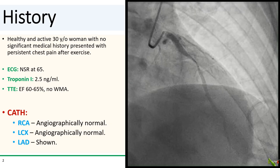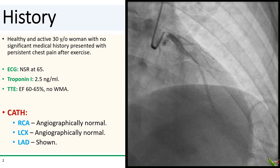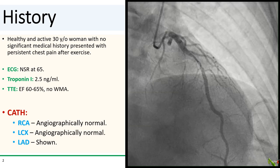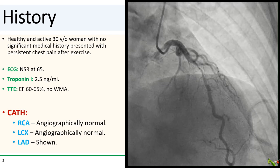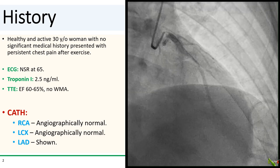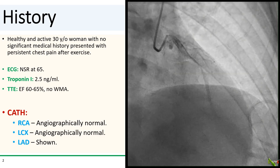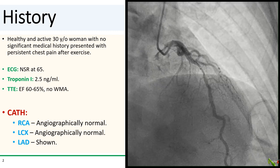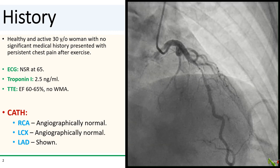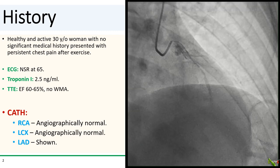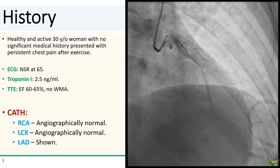The patient is a healthy and active 30-year-old woman with no medical history. She presented to our ER with persistent chest pain after some vigorous exercise. Her ECG and echo were completely normal. However, her initial troponin was 2.5 nanograms per ml, so she was referred to cath.